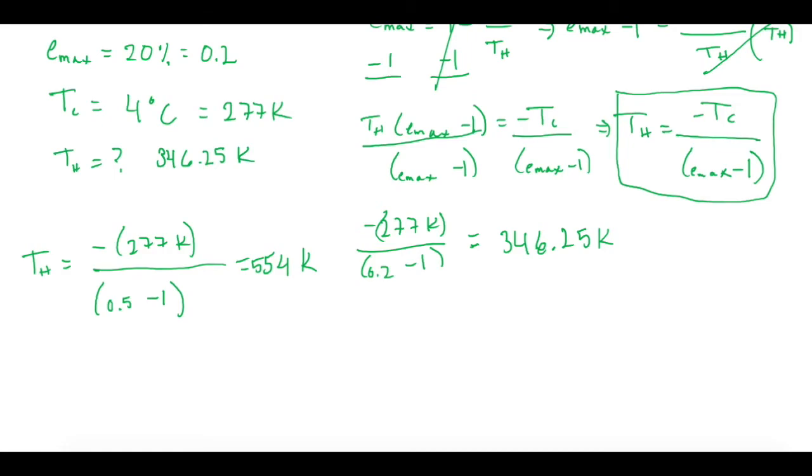But they want to know how much we need to increase 346 by to get this new 50% efficiency. So we'll say delta Th is equal to a final of 554 Kelvin minus 346.25 Kelvin gives us a delta Th. So we need to increase the Th to get 50% efficiency by 207.75 Kelvin or 210 Kelvin.